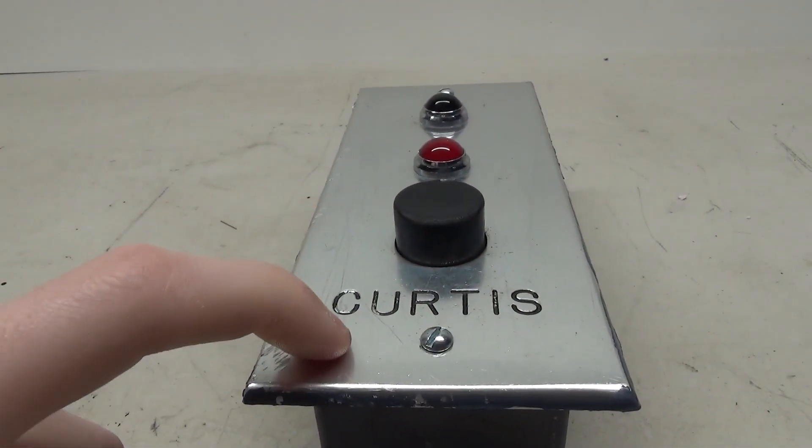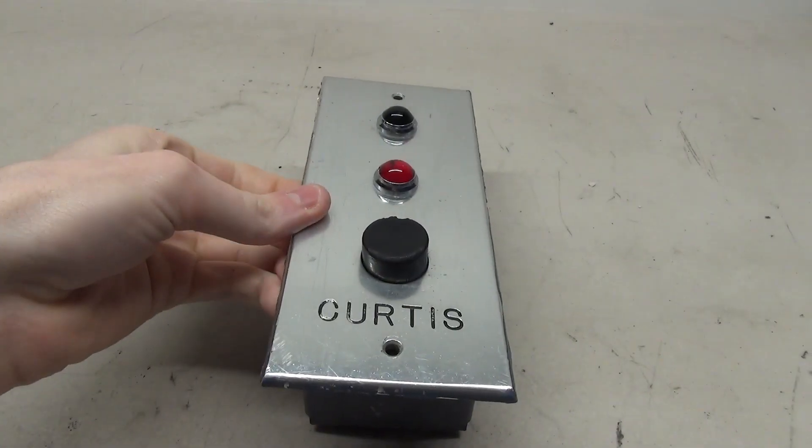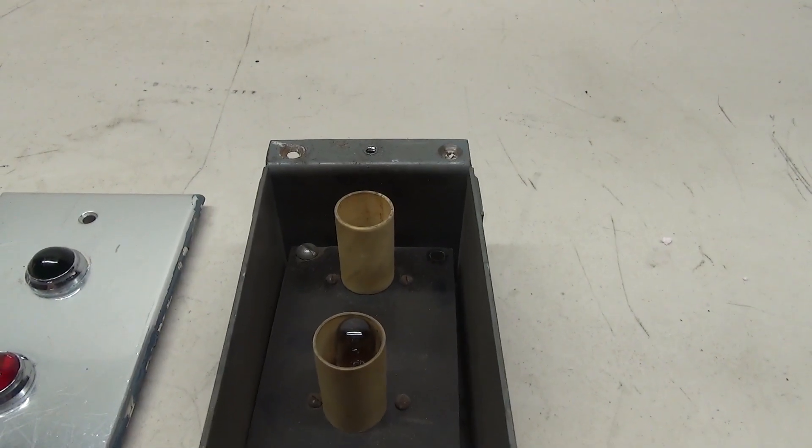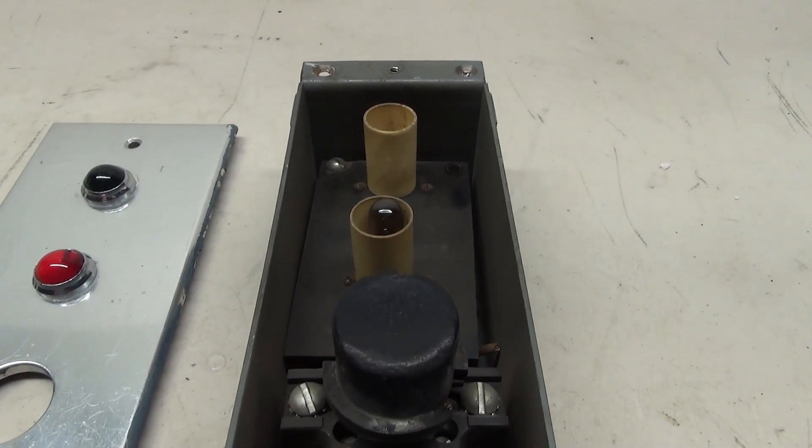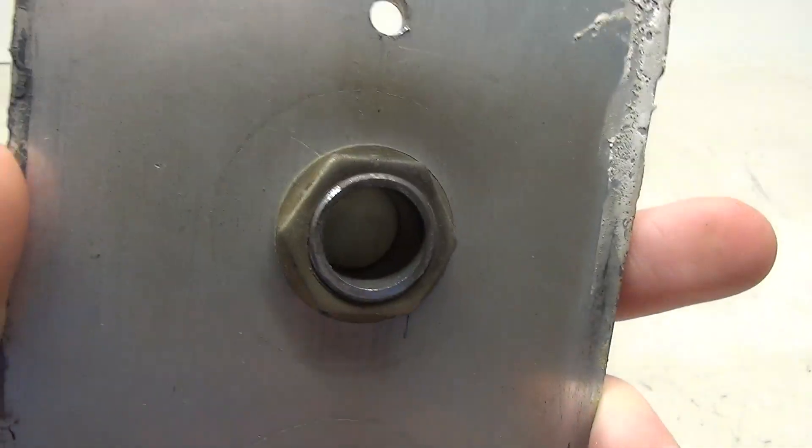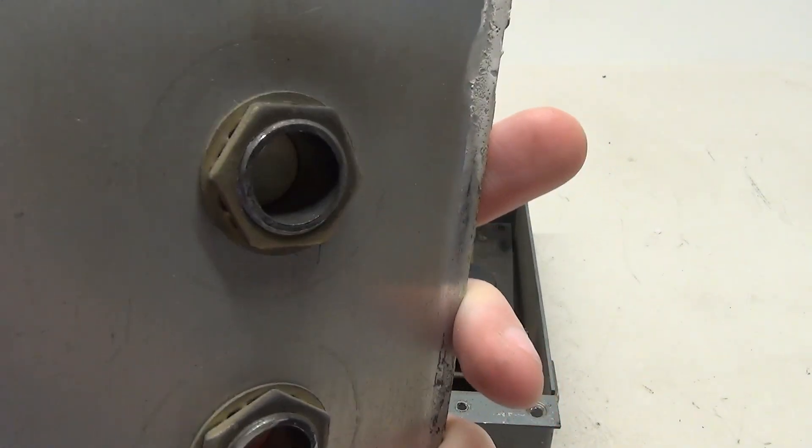So now I'm going to take the plate off and we'll take a closer look inside. So here is what the inside of the button looks like. These lights are mounted to the plate and you can see here how they are mounted.